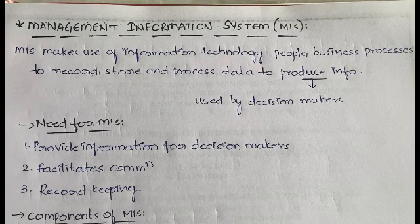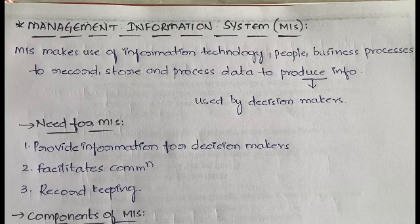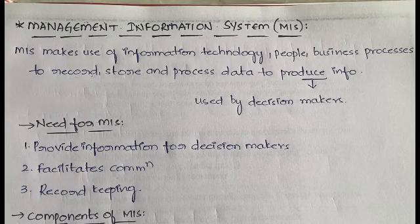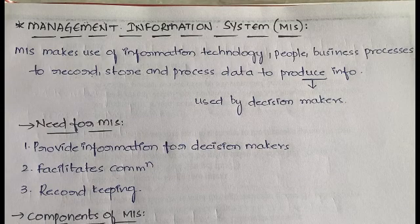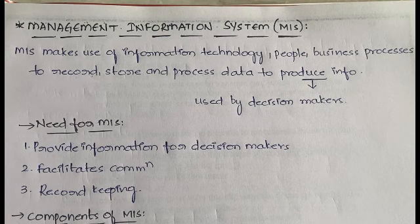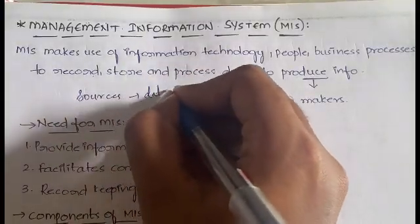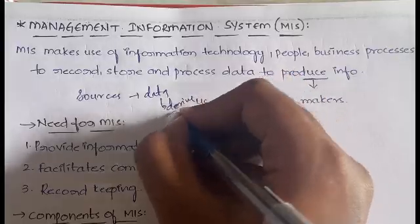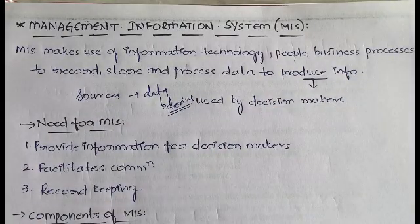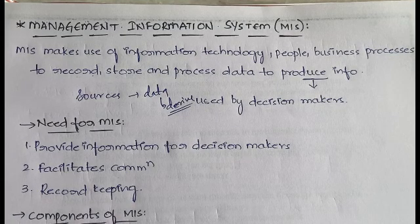Management Information System also extracts data from various sources and derives information from it. These sources can be anything — previous records, current records, competitors' statistics, or whatever is available in the organization. Data is extracted from all these sources and from that data, information is derived about what decisions need to be taken.